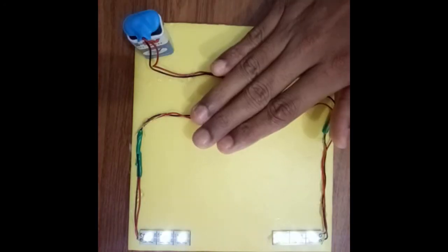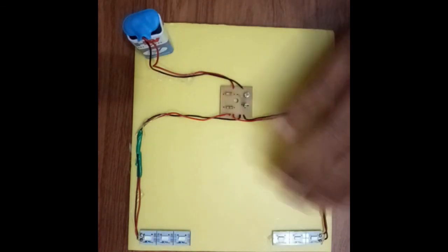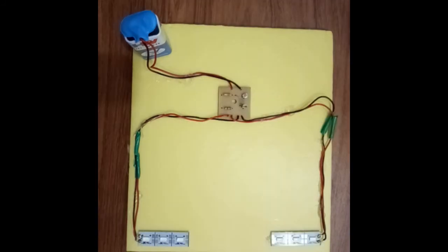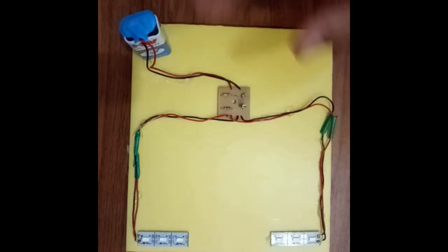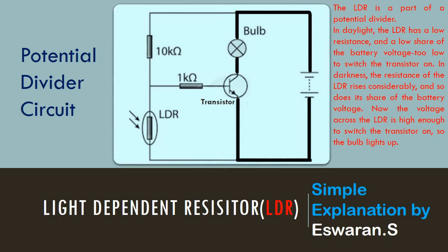Hope you are very clear about the working principle of the light-dependent resistor. With the help of a circuit diagram, I will explain the working principle of this potential divider circuit again. The detailed working principle is given on the right side in terms of voltage or potential difference, but for easy understanding I will explain in terms of current.